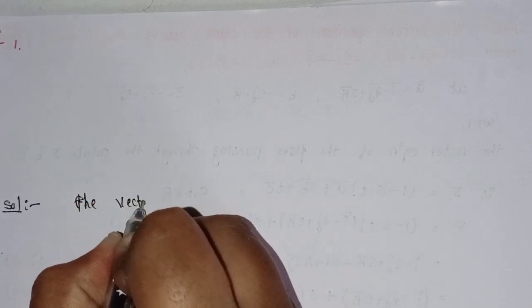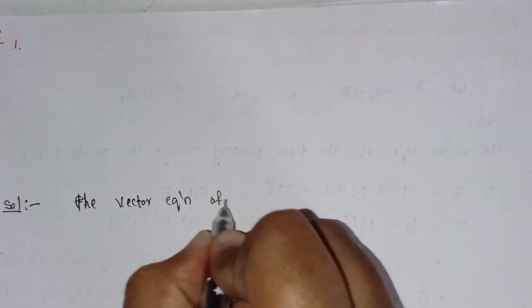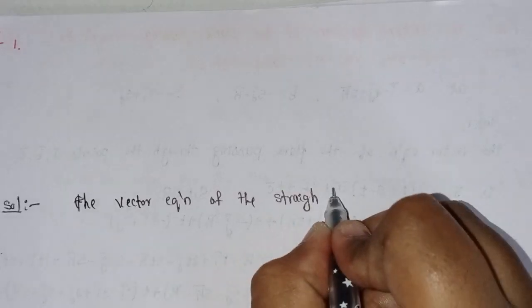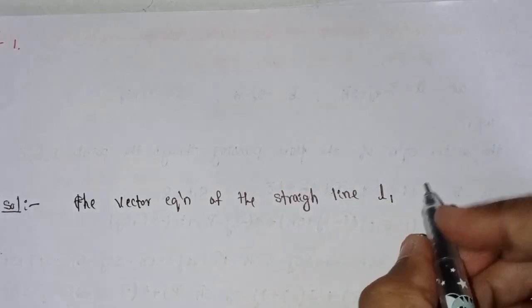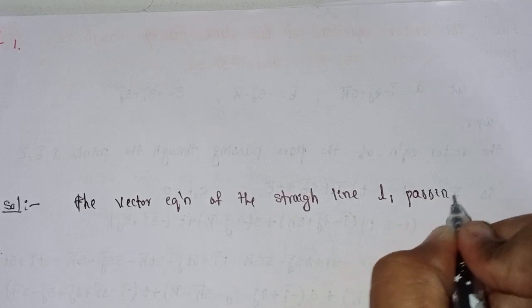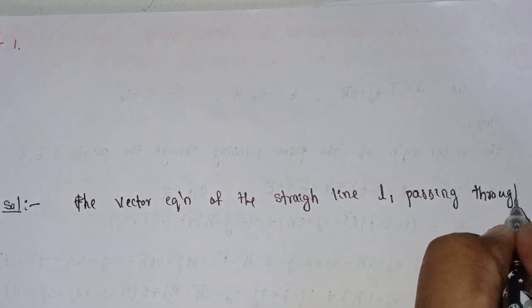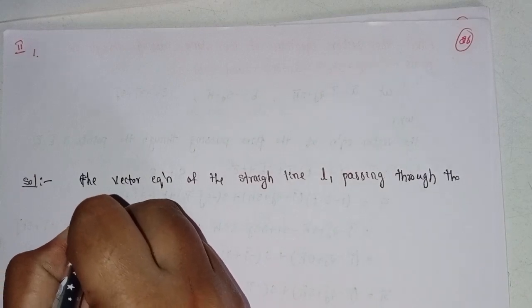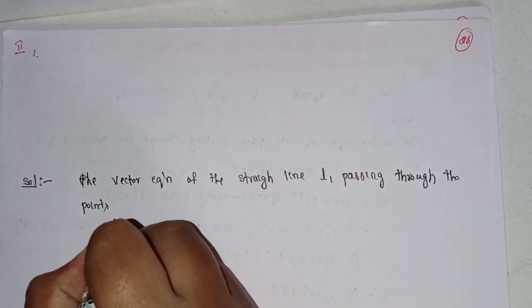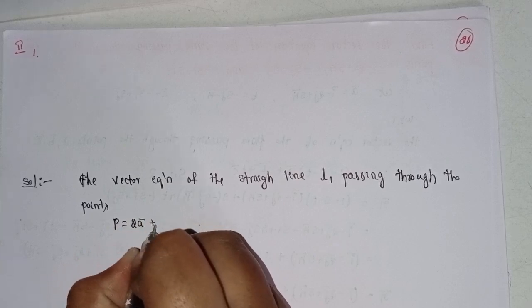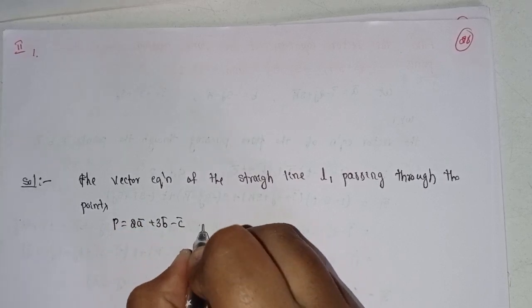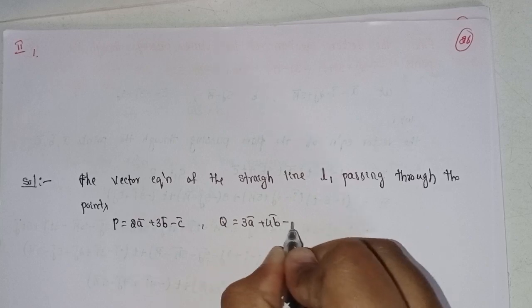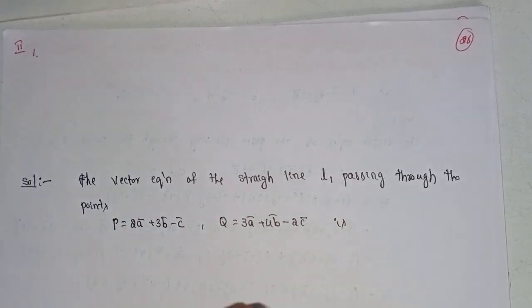The vector equation of the straight line L1 passing through the points p equal to 2a plus 3b minus c, and q point 3a plus 4b minus 2c is: